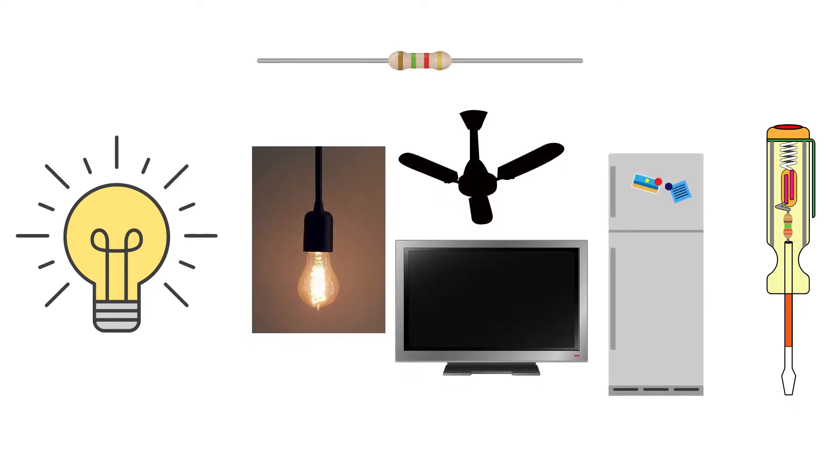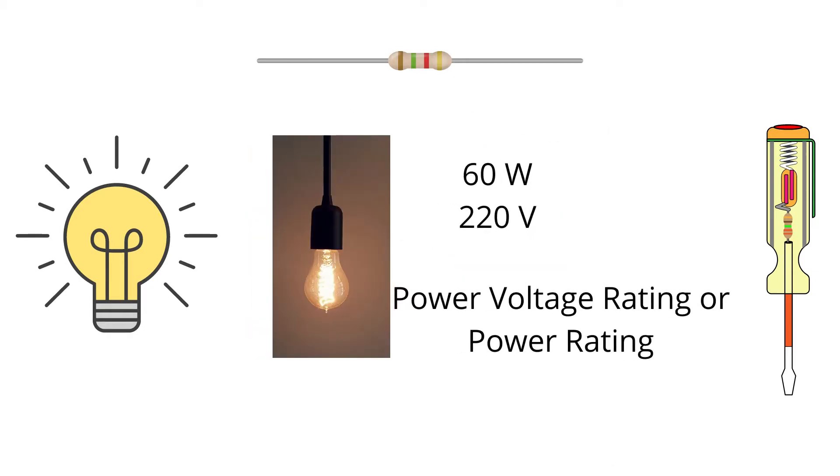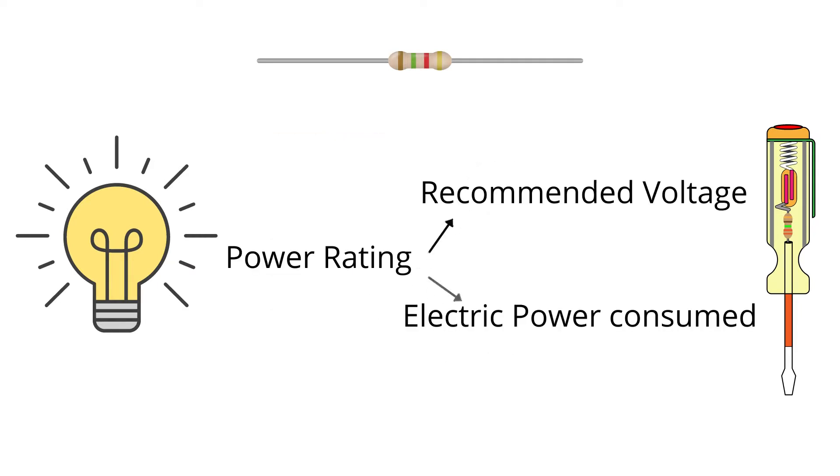Now if you buy an electrical appliance such as an electric bulb, a ceiling fan, a refrigerator, or a TV, you may notice that there are two numbers clearly marked on it: voltage and power. For example, on an electric bulb it will be written 60 watts and 220 volts. This is called the power-voltage rating, or simply the power rating. This power rating is important because it tells us what is the recommended voltage to use the appliance and what will be the electric power consumed by the appliance.